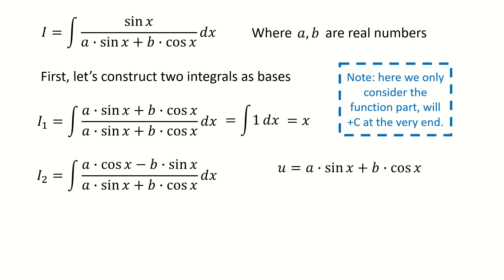We use the substitution. We let u equal the denominator, and then we got du. If you compare the terms colored in red, you will find they are exactly the same. So that's the reason why we construct the numerator in this way.